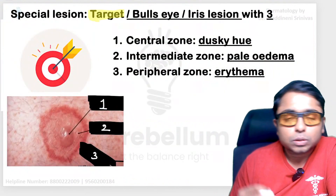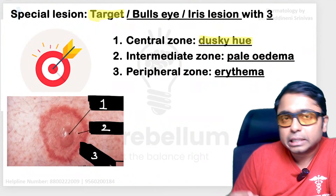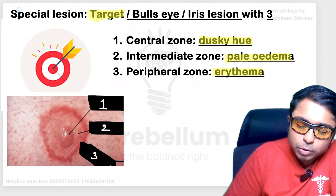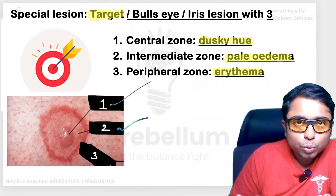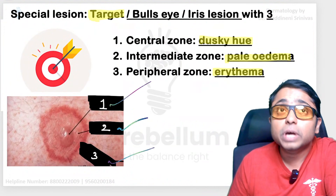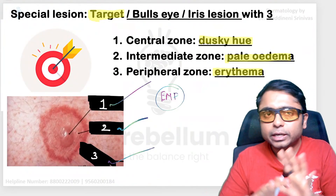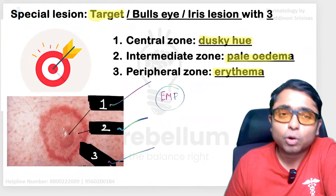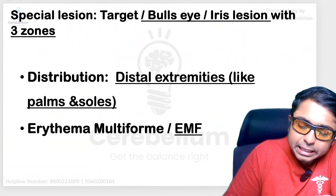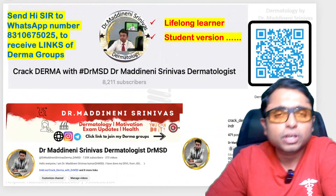Next is the target lesion, also called bullseye lesion or iris lesion, where there will be three zones. The central zone shows redness or a dusky hue. The intermediate zone is pale in color, and there is a peripheral zone of erythema. Zone 1 is dusky hue, zone 2 is pale due to edema, and zone 3 is erythema. This is classically seen in patients of erythema multiforme, and the target lesions are classically seen on the palms and soles.